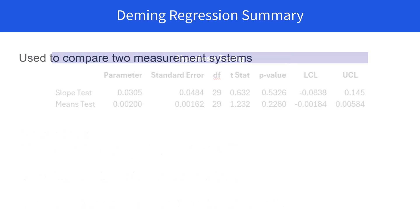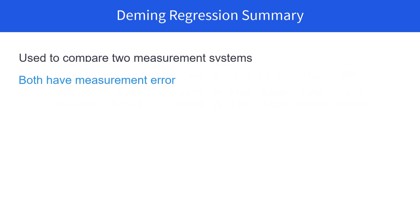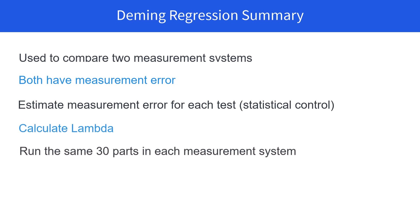So what we did with the Deming regression is we used it to compare two measurement systems, both at measurement error. We estimated the measurement error for each test, calculated lambda, ran the same 30 parts in each measurement system, ran the Deming regression analysis, and then looked at the results to see if the slope could be 1 or the means could be 0.